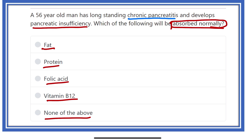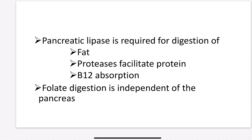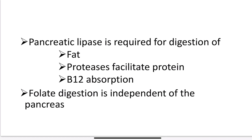Among these substances, which one is able to absorb without the help of the pancreas? First, pancreatic lipase is required for digestion of fat. So fat absorption is dependent on the pancreas — the pancreas is responsible for fat absorption.